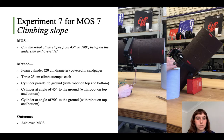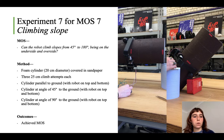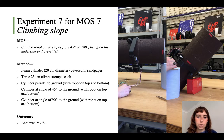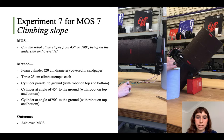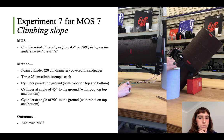Experiment six was transitioning from trunk to branch, which couldn't be tested with the robot's current mechanism. Experiment seven tested climbing slope: can the robot climb slopes from 45 degrees to 180 degrees, including on the underside? The video shows it climbing on the underside at 180 degrees and on the over-side at 45 degrees — it could achieve all those angles and met this measure of success.